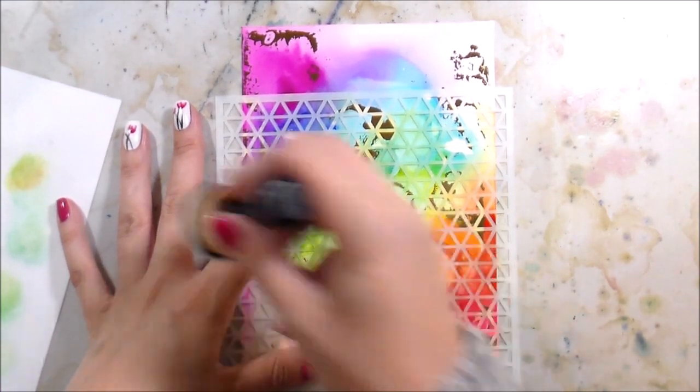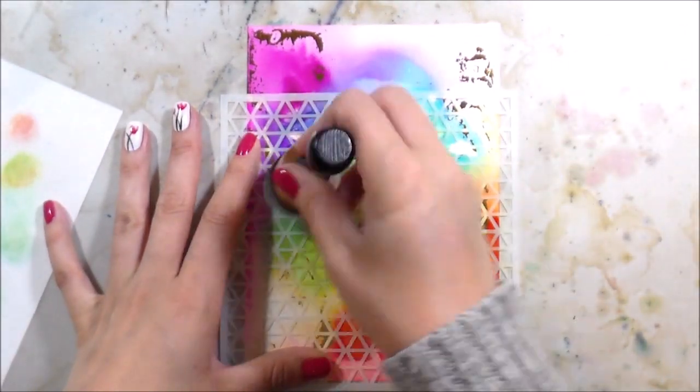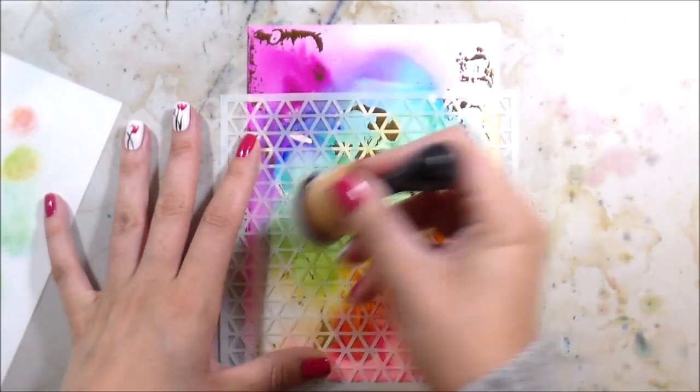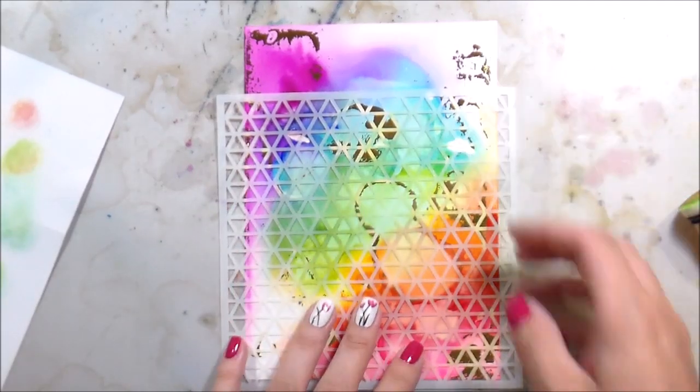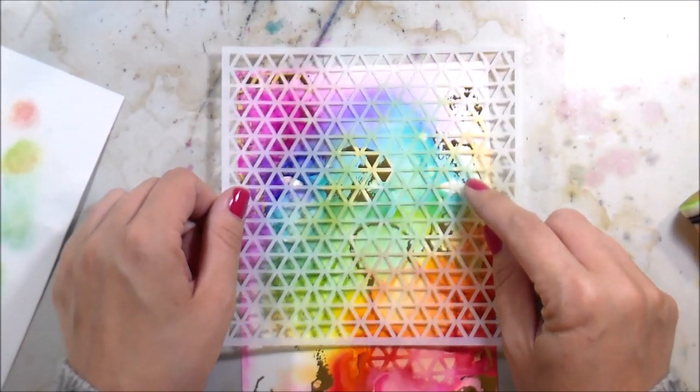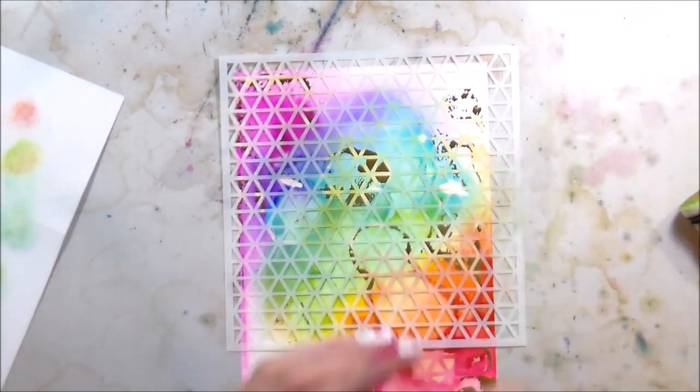This one I didn't do all over like the tropical background. I just picked a couple of different spots that I wanted the triangles to show through at. Sometimes when you're making these backgrounds, you have some white spots where the pigment doesn't get, which I really love.